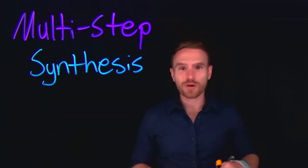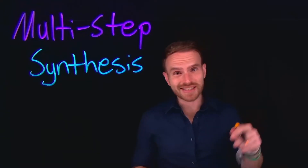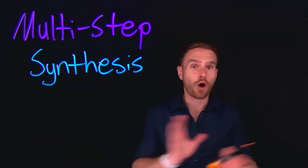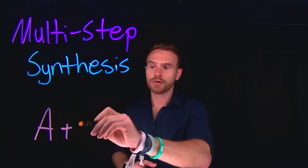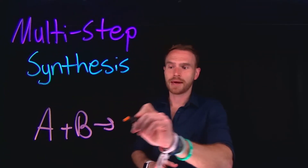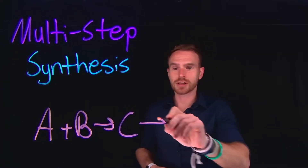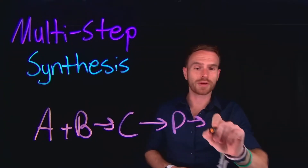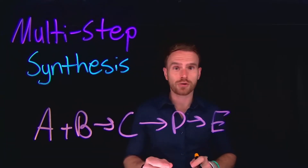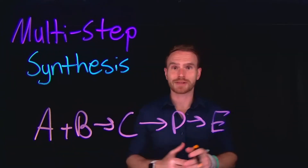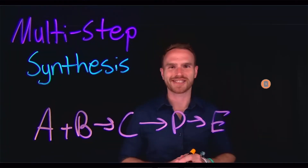I am so glad you're here because today we're learning all about multi-step synthesis in organic chemistry. Arguably, this is exactly what we've been building up through for all of organic chemistry. When we convert one reactant to another by combining them to make A plus B equals C, we can do further transformations to convert C to D and subsequently D to E. We're going to walk through some tips and tricks to devise your plans for multi-step synthesis. Stick around because I have lots of practice problems that should help on your next exam.